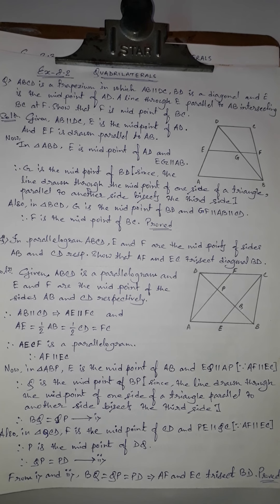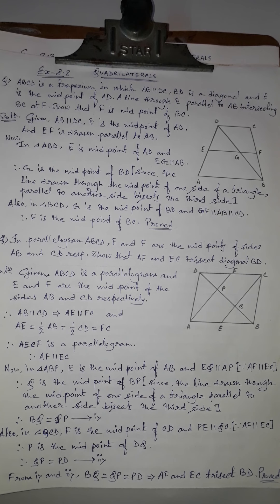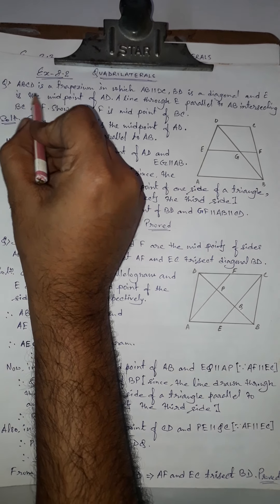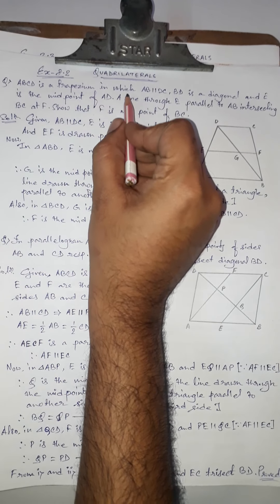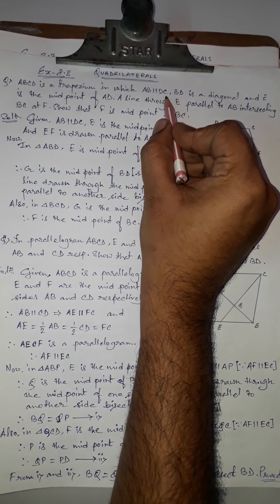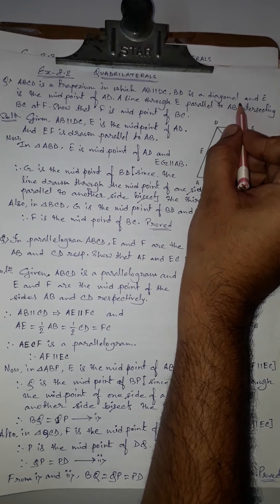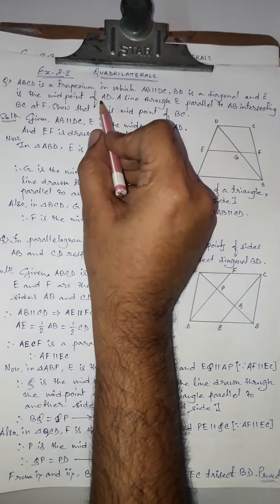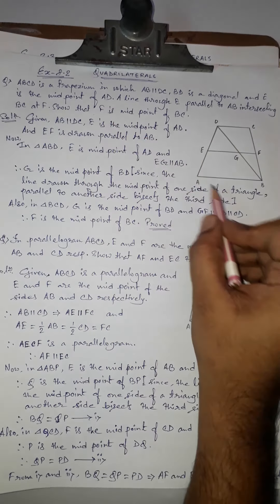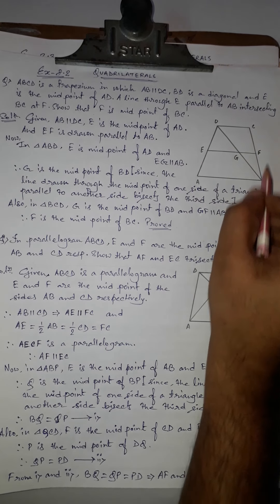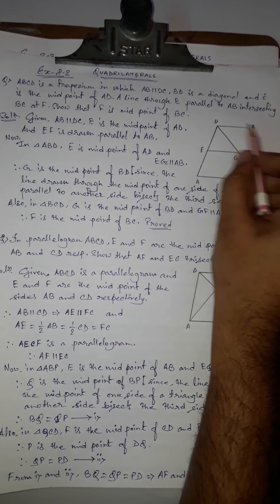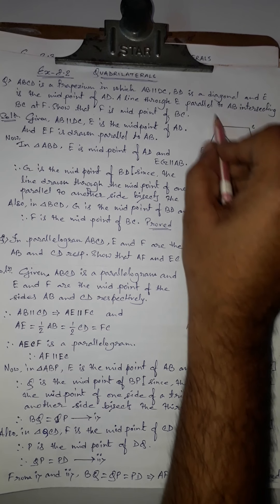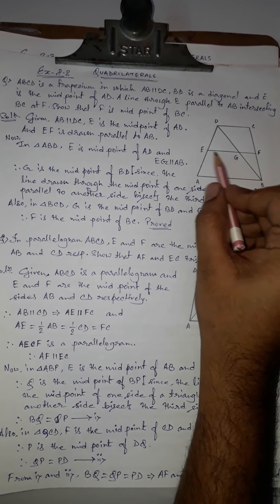Om Namashiva. Students, continuing with the chapter Quadrilaterals, our next application from Exercise 8.2 is: ABCD is a trapezium in which AB is parallel to DC, BD is a diagonal, and E is the midpoint of AD.